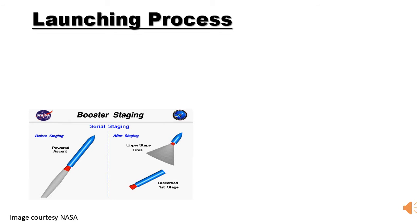Basically, it's like A is on top of B and B is bigger than A. When B ignites after a certain height, the first stage rocket discards from the second stage, leaving the main second stage rocket to fly.